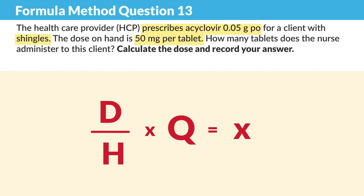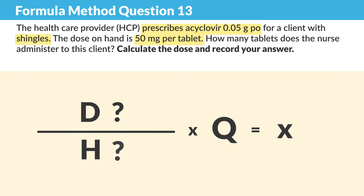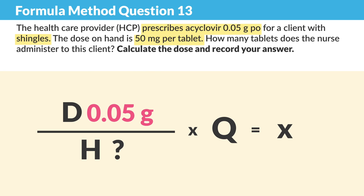Now here's where it gets tricky. D is the desired dose, or the doctor's order — so 0.05 grams. Now the H, this is where it gets hard. The H is what we have on hand.